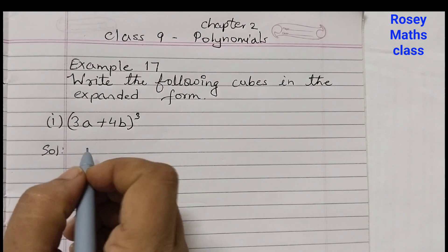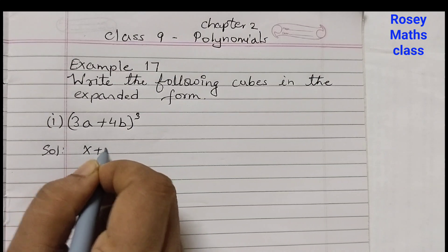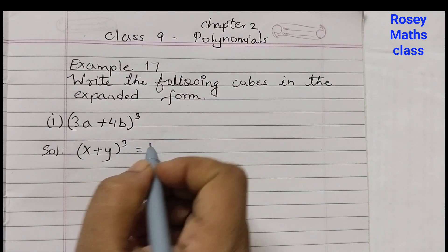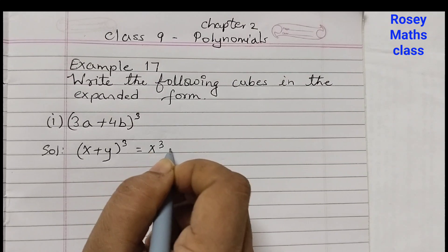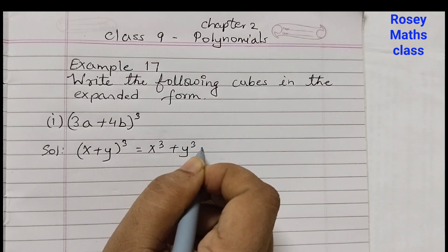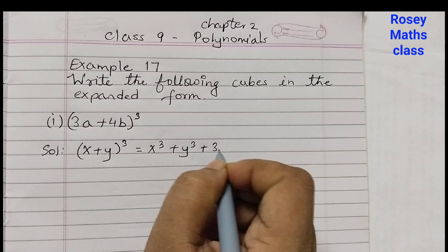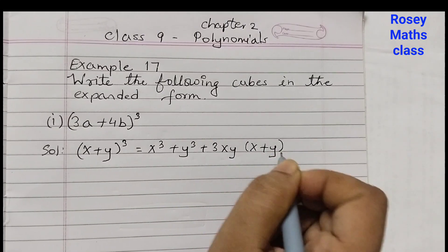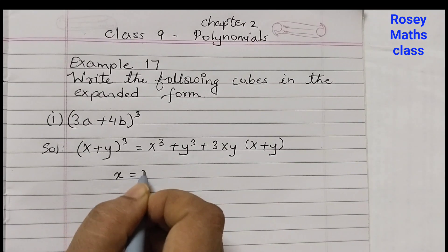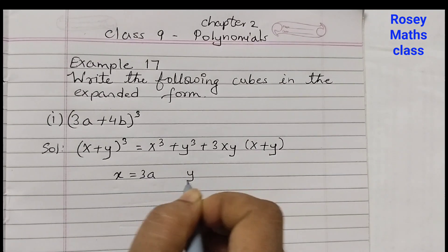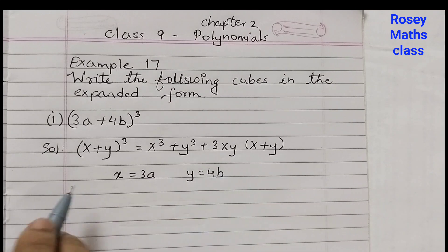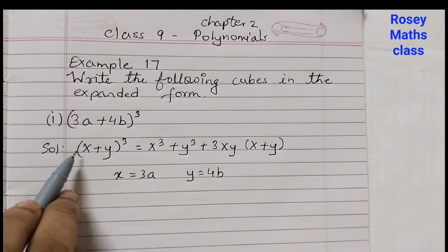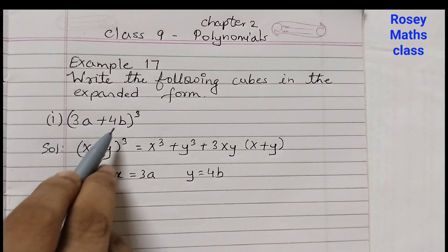Now, we are going to use the identity of (x + y)³ which equals x³ + y³ + 3xy(x + y). Here x is 3a, y is 4b. We are comparing this expression with this one, so x is 3a, y is 4b.